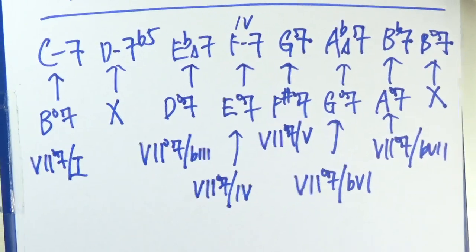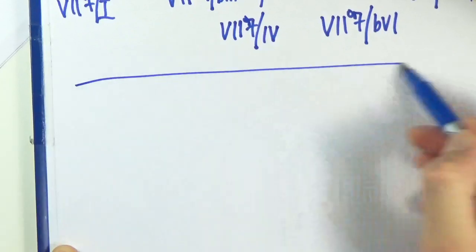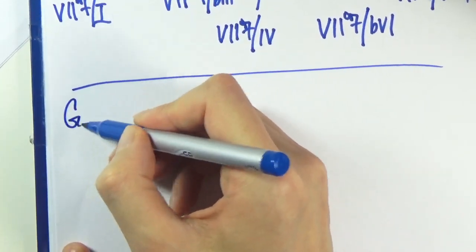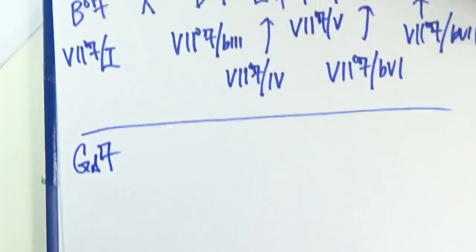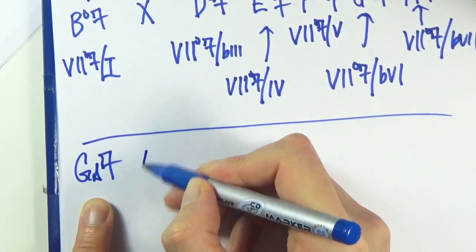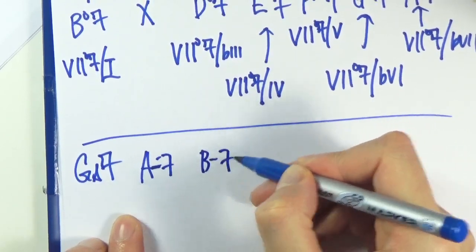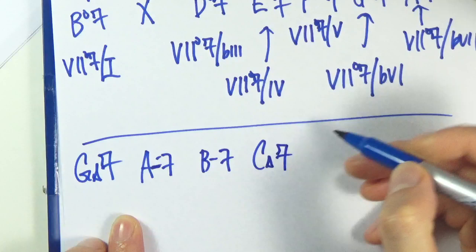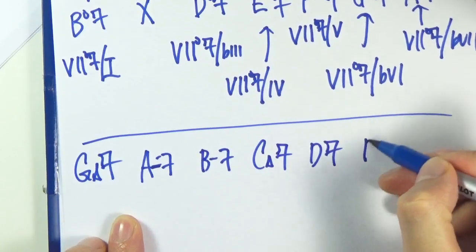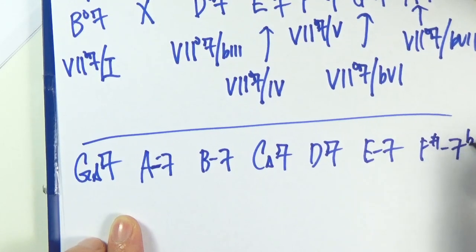So let's work out another example real quick. Let's go to say G major. So G major 7, A minor 7, B minor 7, C major 7, D dominant 7, E minor 7, and F sharp minor 7 flat 5.